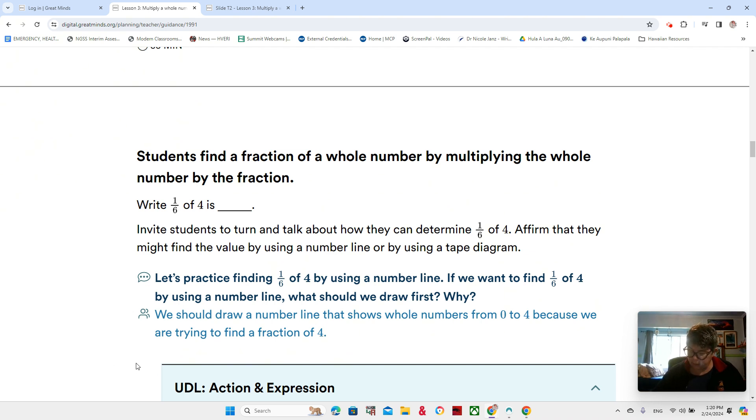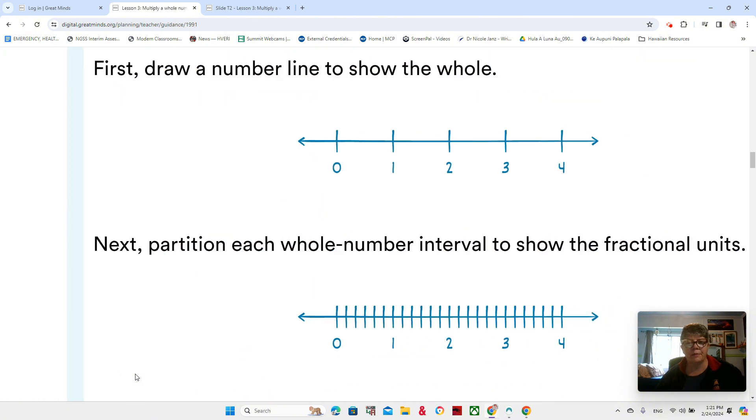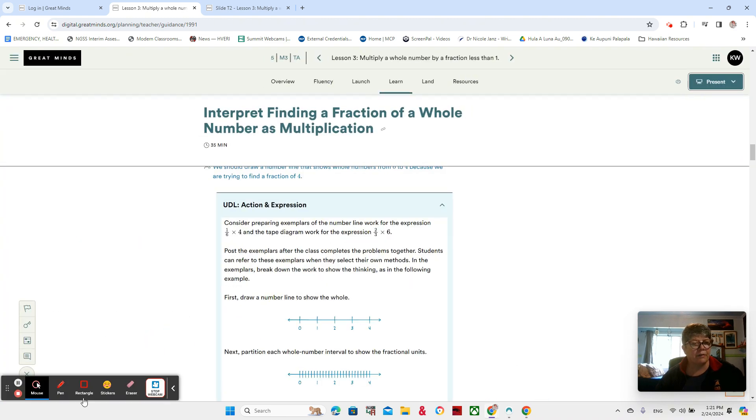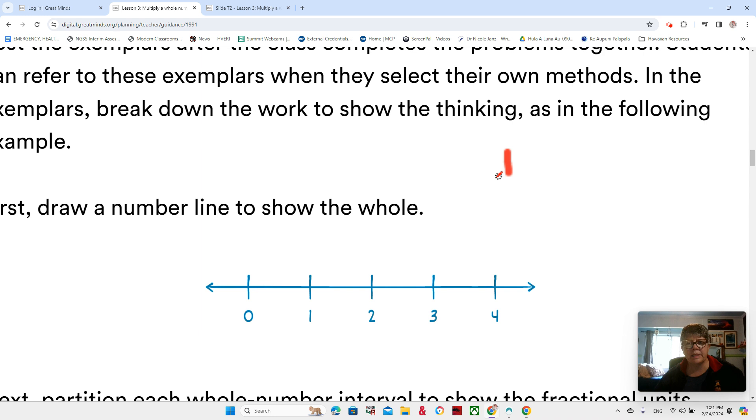Let's practice finding one-sixth of four on the number line. If we want to find one-sixth of four by using a number line, what should we draw first? I reckon we should draw a number line. There we go, and it's broken into four parts because we are making one-sixth of four.